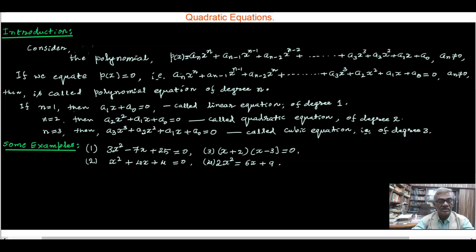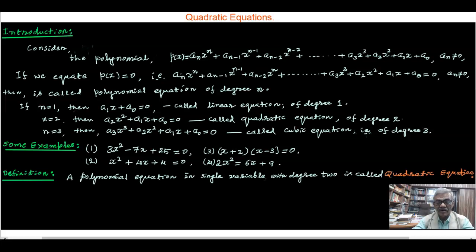As I have already told, any polynomial equation of degree 2 is called a quadratic equation. And hence with this example and the explanation made above, I would like to put it in the form of a definition. A polynomial equation in a single variable with degree 2 is called a quadratic equation.